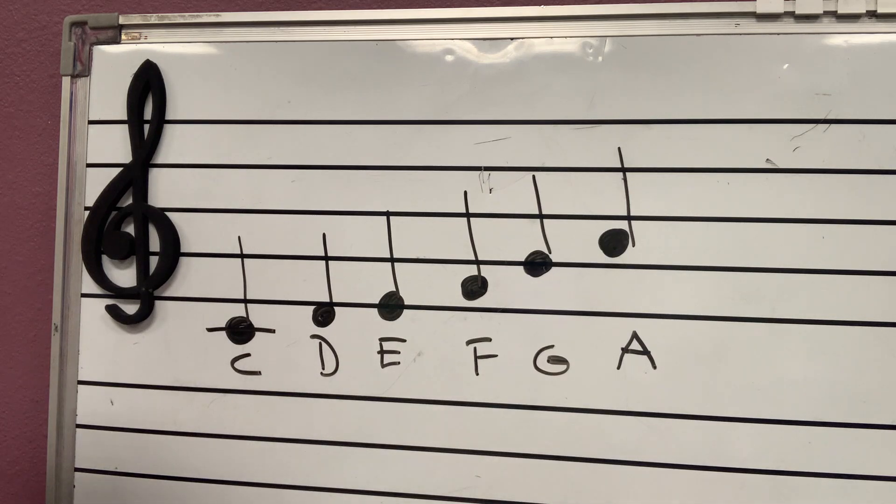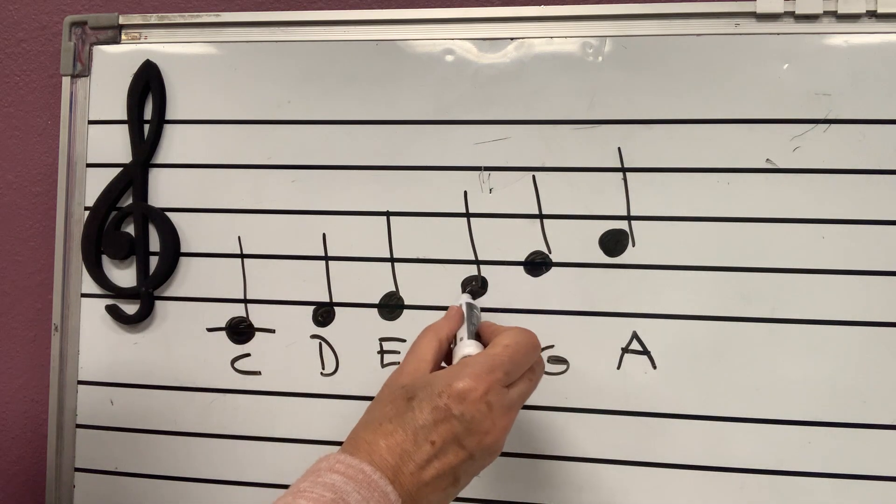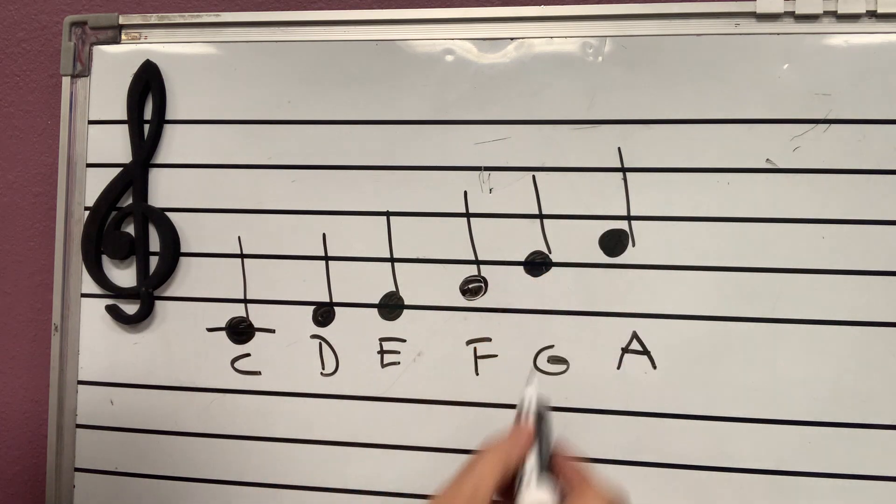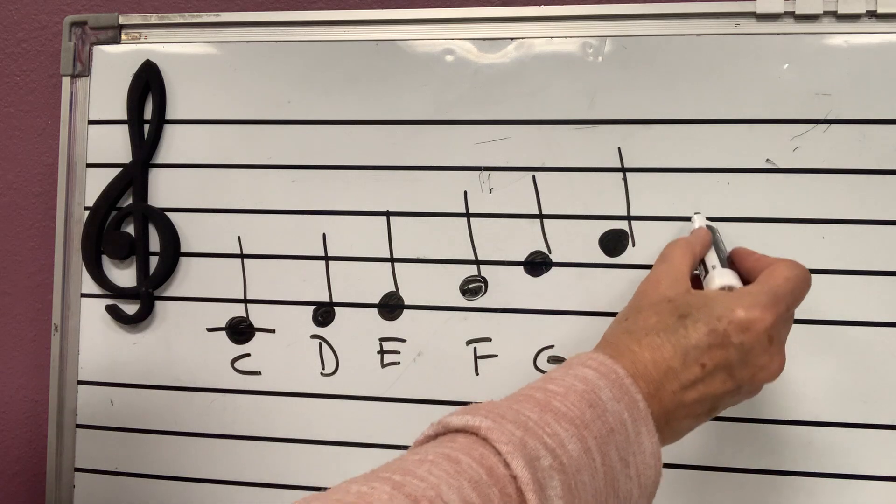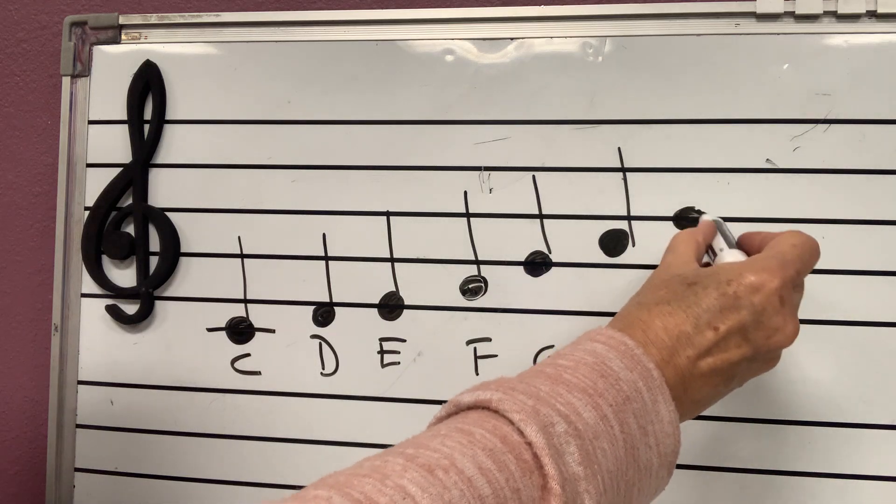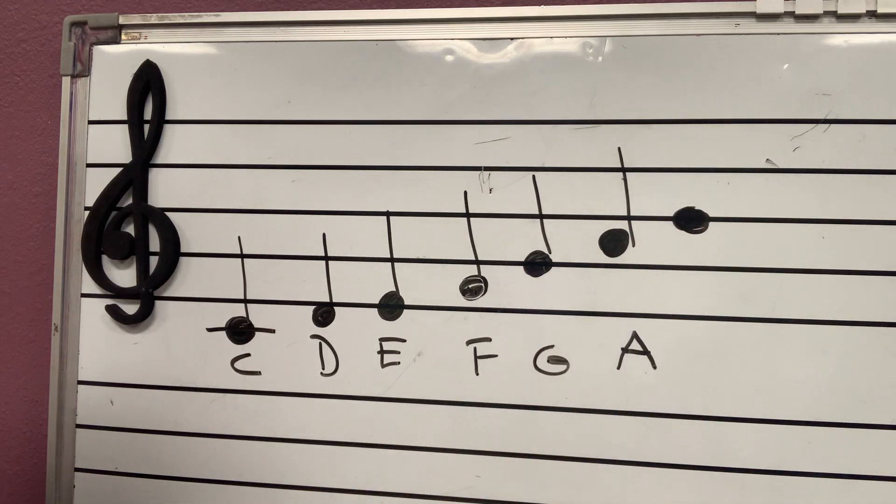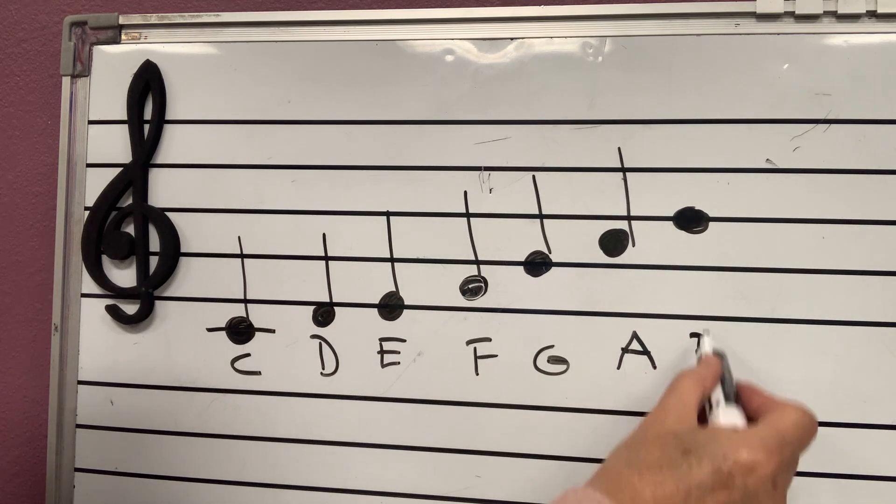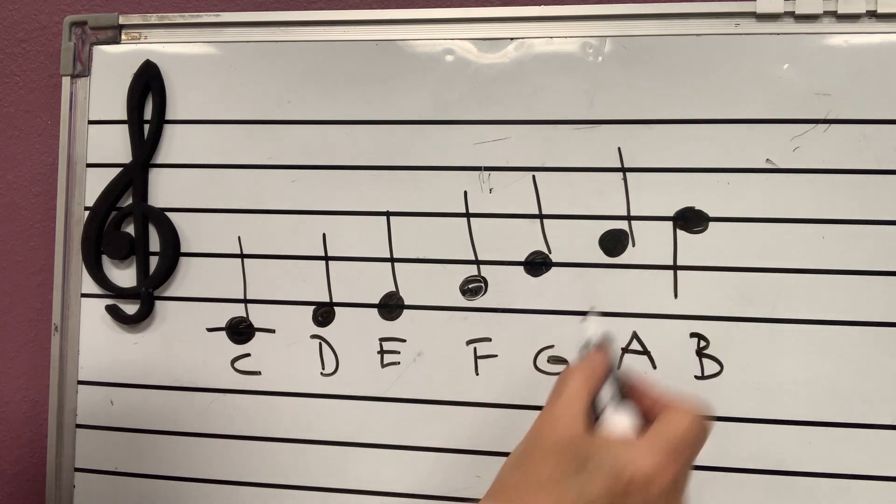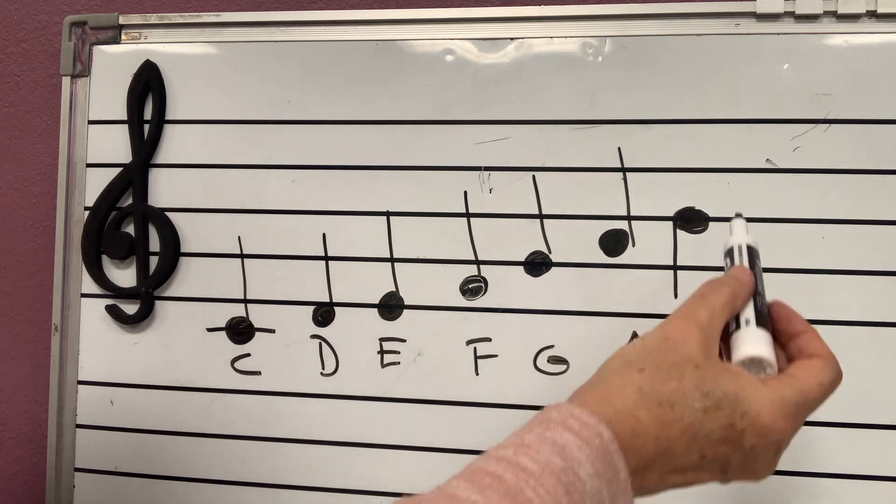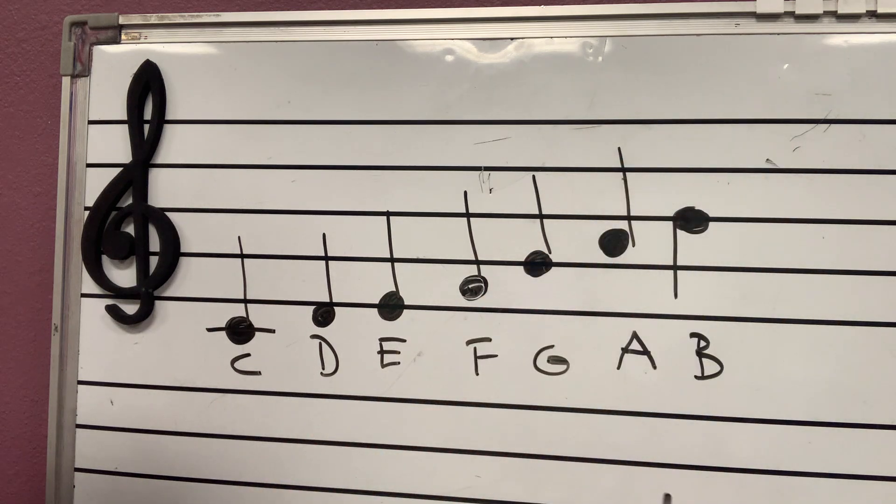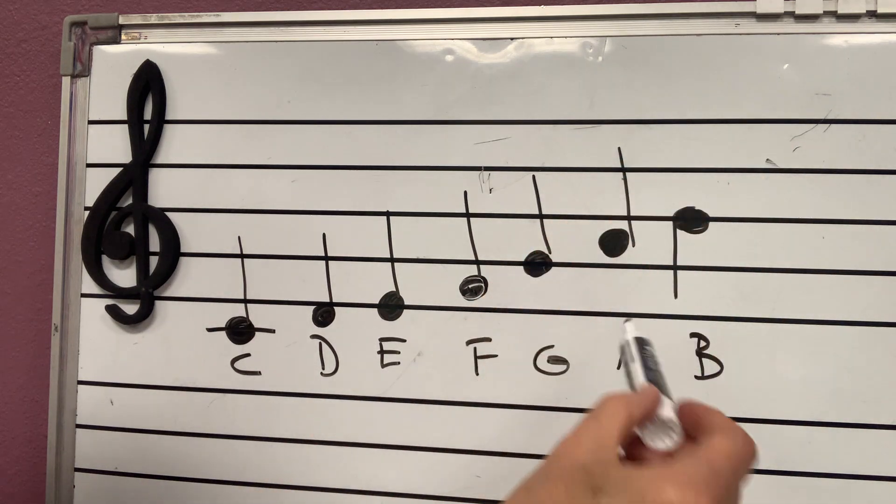We can figure that one, and notice it's on the second space. The first space is F, the second space is going to be A. And who's going to be this one? Who's after A? B. And for B I'm going to start putting the sticks down because they start getting high up. And you know when the notes get high up, the sticks come down.